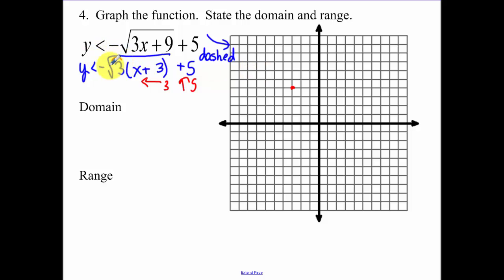Now, this 3 is a horizontal compression by 1 third. Remember, you take the reciprocal of that number to figure out whether or not it's a stretch or compression. You take the reciprocal. Since the reciprocal of that number is between 0 and 1, it's a compression. So I'm going to go down 1, but only over 1 third. And for the next point, I would go down 2, but only over 4 thirds. And again, you can approximate those.